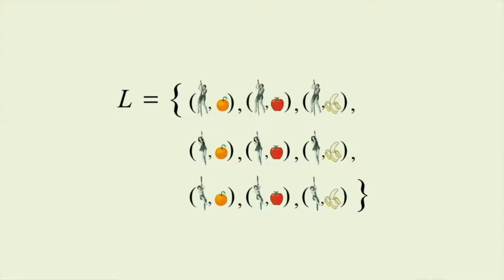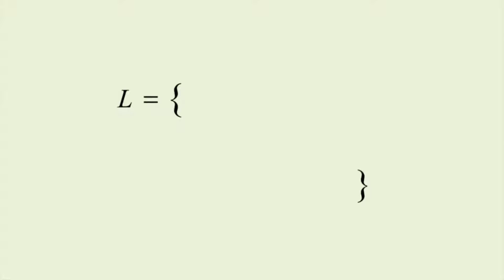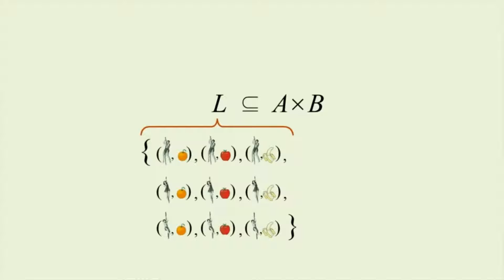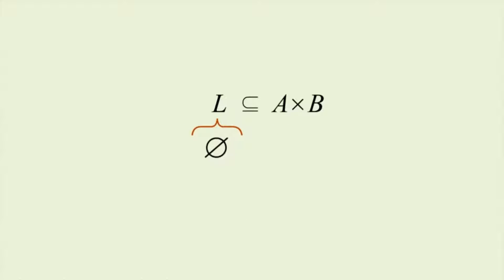On the other hand, it might be that nobody in set A likes fruit, in which case relation L would be the empty set. So a binary relation from one set to another is always a subset of their Cartesian product, since it can contain as many as all or as few as none of the ordered pairs in the Cartesian product.